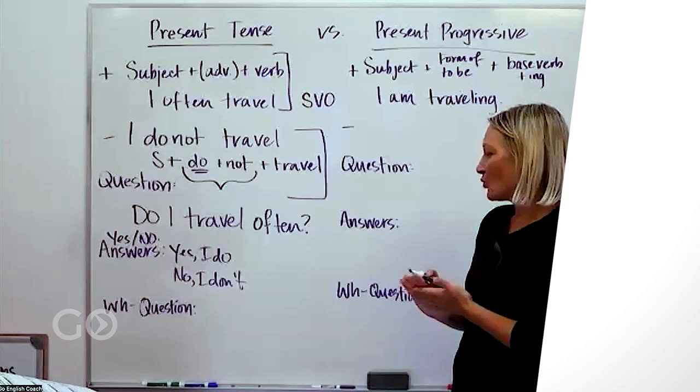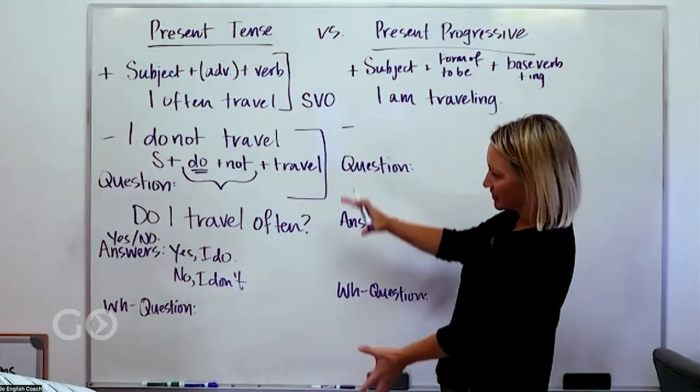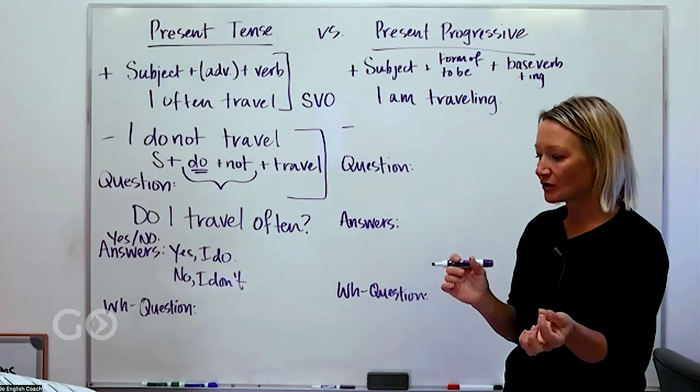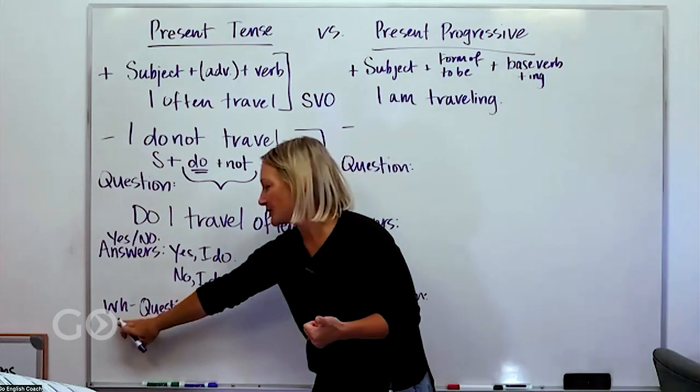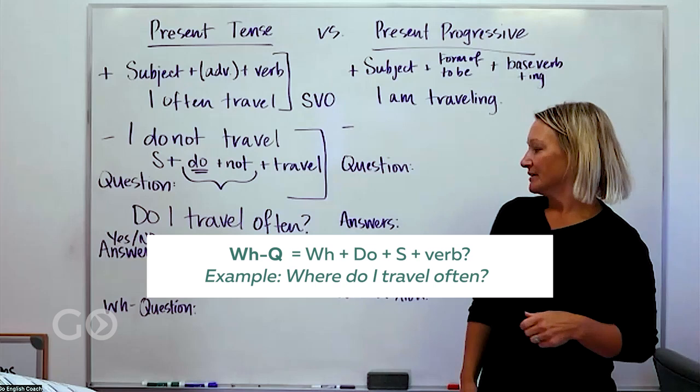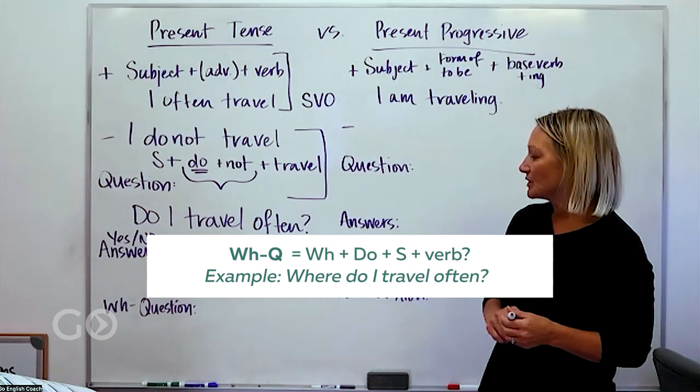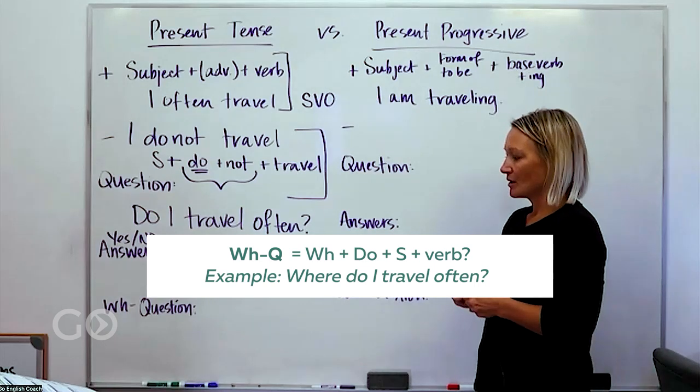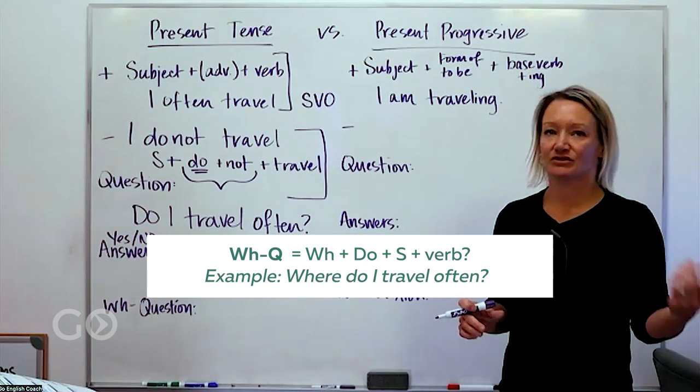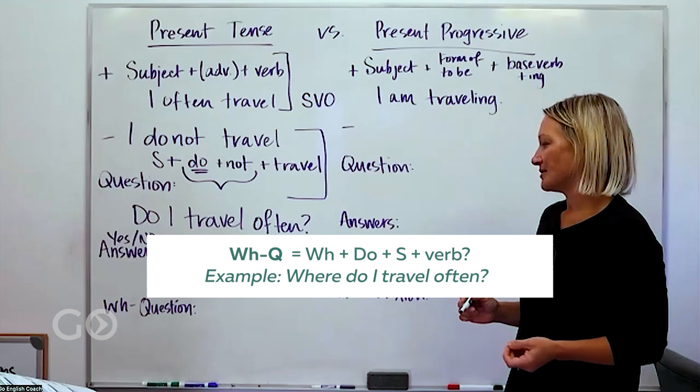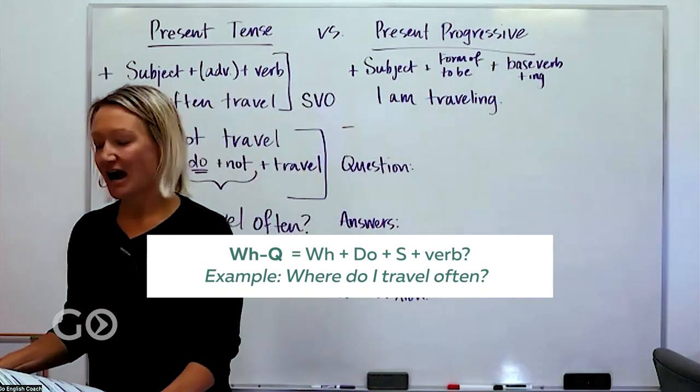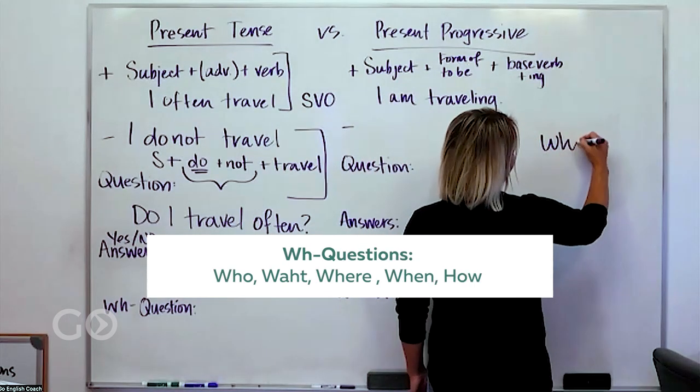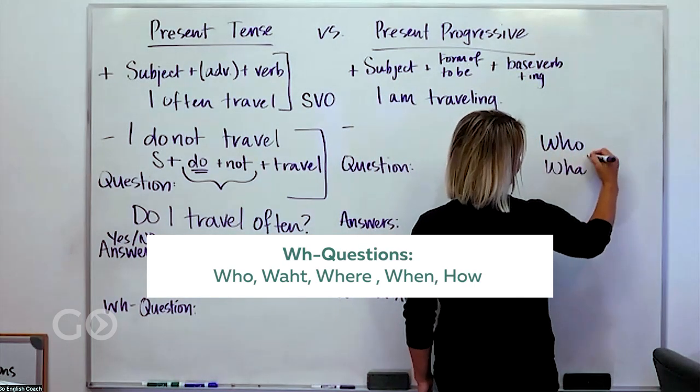And then one last structure for the present tense is a more detailed question. We call them WH questions and we use those when we want just more information. So where do I travel? When do I travel? And those are probably the only two that make sense there. How, I guess you could say how.